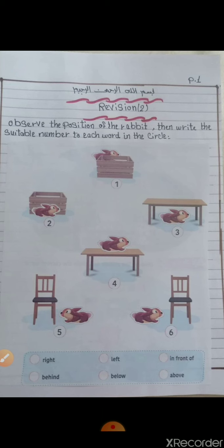Observe the position of the rabbit, then write the suitable number to each board in the circle. Now let's see the position - is the rabbit right or left, in front of or behind, below or above?